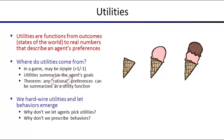Specifying utilities isn't necessarily trivial. You might say for the vacuum agent: whenever you suck up some dirt, plus one — that's your utility. But that agent could decide the right thing is to dump a lot of dirt, suck it up, then dump it again, because you give a reward every time it sucks up dirt. So you have to be very careful how you specify utilities, otherwise you get totally undesired behavior even though your agent is rational.